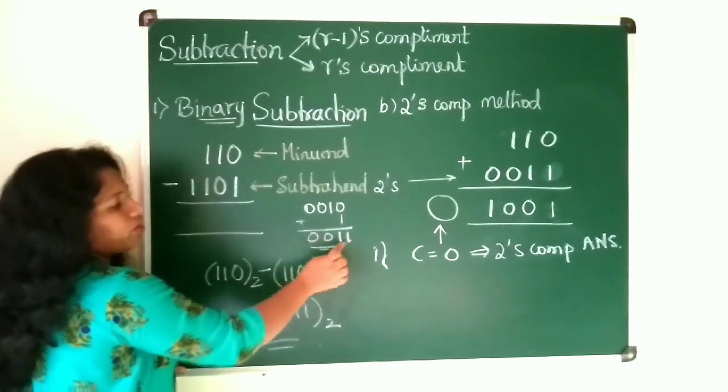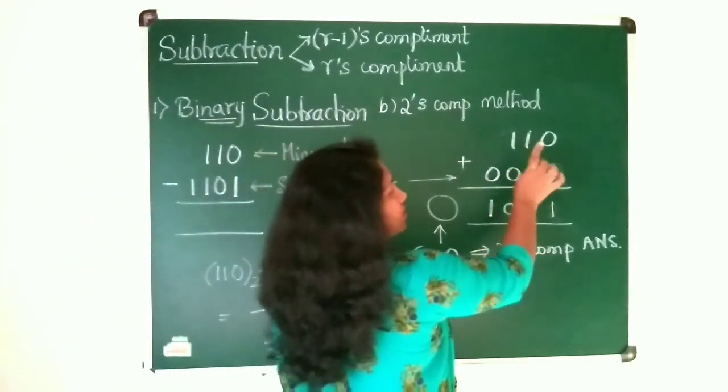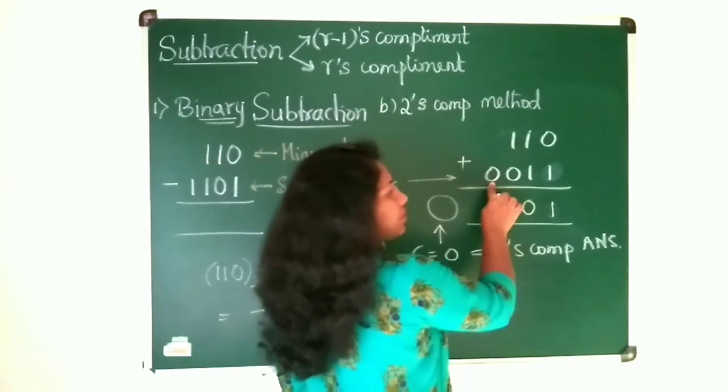So 0, 0, 1, 1 is the 2's complement of this subtrahend. Put that here. So this is minuend and as it is I have written.